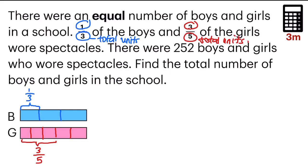And then the next part, it tells us that the total number of boys and girls who wore spectacles is 252. So which means everything that we have highlighted just now, this entire portion, is equals to 252. So the question is, they want to find out the total number of boys and girls in the school.